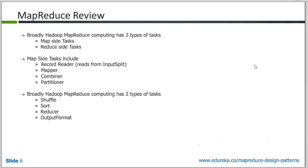Then the partitioner — this is one of the controls which the framework provides you. The default partitioner is the hash partitioner, which hashes your keys and does a modulo on the number of reducers, and your key values get transferred to the reducer side. But there is a way for you to write your own custom partitioners, and we'll see in some of the design patterns where writing such things is going to be useful.